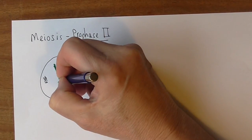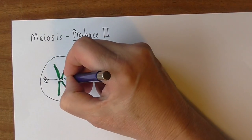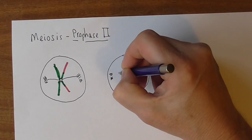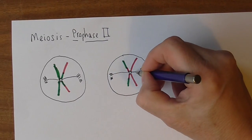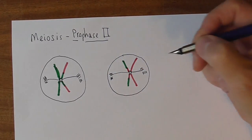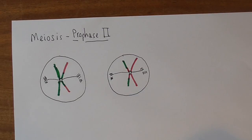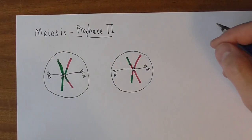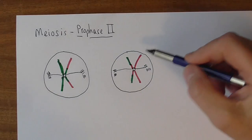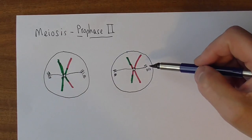And we start to form new meiotic spindles. Same material, this tubular protein material. And the chromosomes again condense. So the centrioles duplicate, the chromosomes condense.